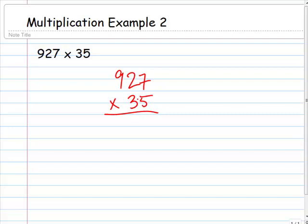We want to multiply the bottom number, the ones digit, with the top number. So that's 5 times 7 is 35. The 3 gets carried over to the tens place. We have 5 times 2, that is 10, plus 3 is 13. And we carry that over to the next place. We have 5 times 9 is 45, plus 1 is 46.